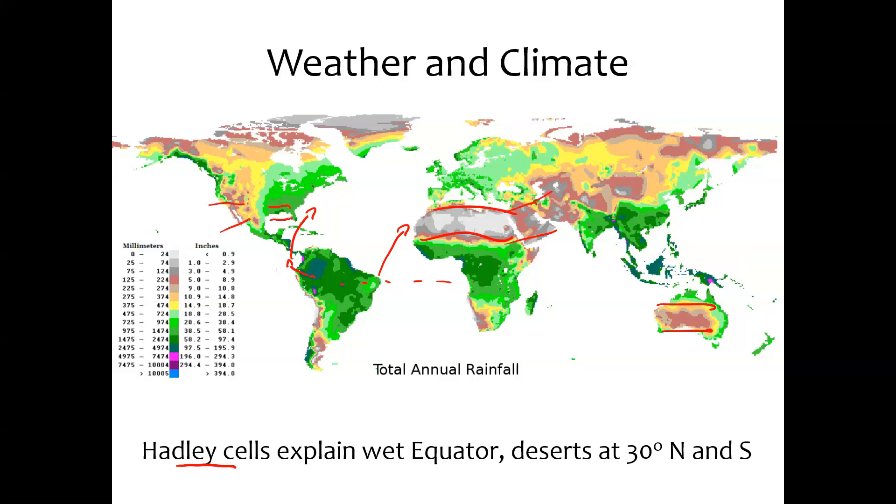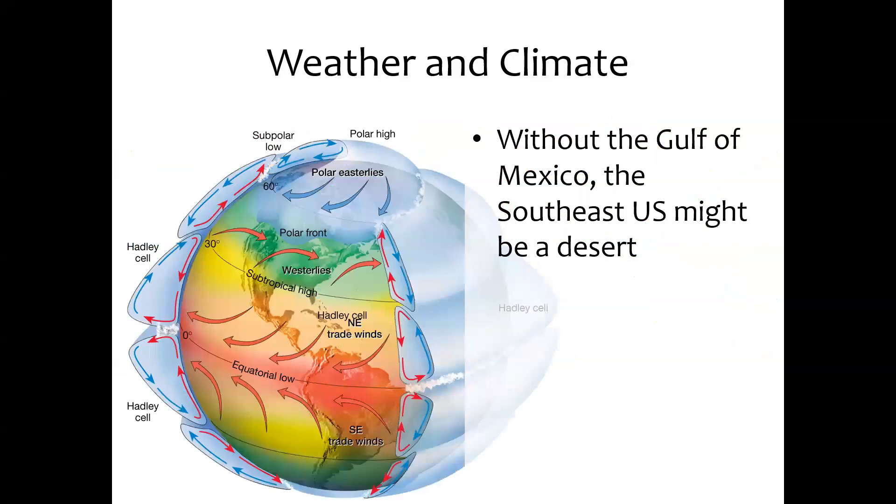But not the American Southeast, luckily, and that's because there's water close by that adds moisture in the Gulf of Mexico. Without that Gulf of Mexico, the Southeast US might actually be a desert. But because of that nearby moisture and the rain that generally moves from west to east here, we end up being a lot wetter in the south than we otherwise would be.